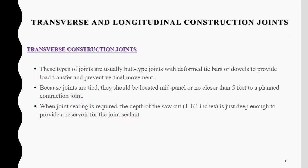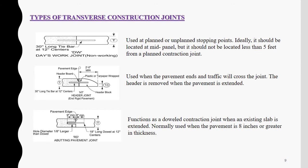Mainly, construction joints are divided into transverse and longitudinal types. Transverse construction joints are usually butt type joints which use deformed tie bars or dowels to provide load transfer and prevent vertical movement. When joint sealing is required, the depth of cut is just deep enough to provide a reservoir for the joint. The types of transverse construction joints include: first, the non-working joint, used at planned stopping joints, which should be located at mid panel but not less than 5 feet from a planned contraction joint.